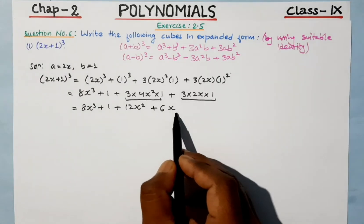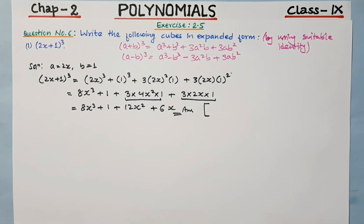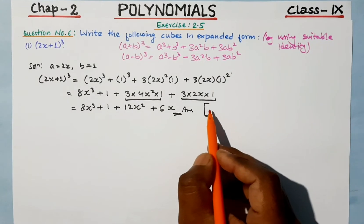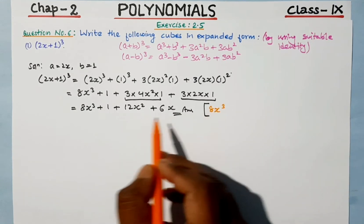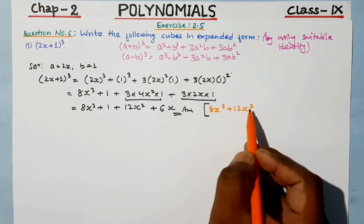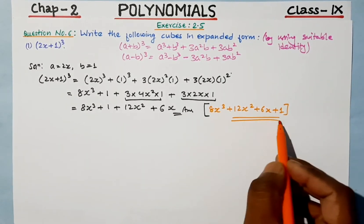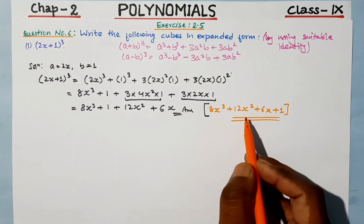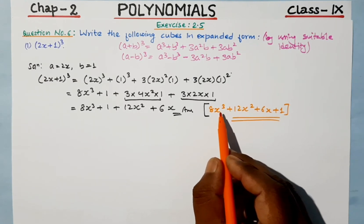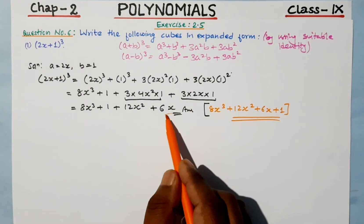So the final answer is 8x cube plus 12x squared plus 6x plus 1. Now, as this is a polynomial, we write the answer in standard form — that means in decreasing order of the exponent of the variable. So we write: 8x cube, then 12x squared, then 6x, and the constant last. That is our final answer.